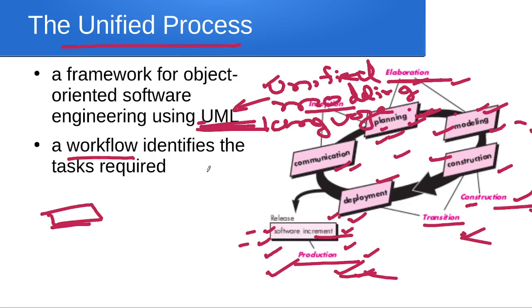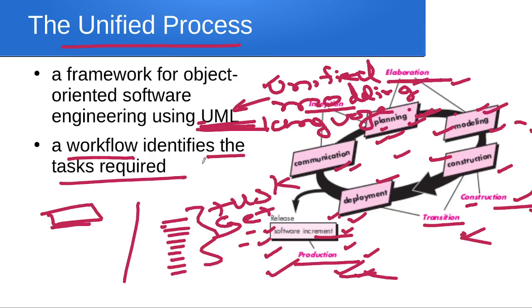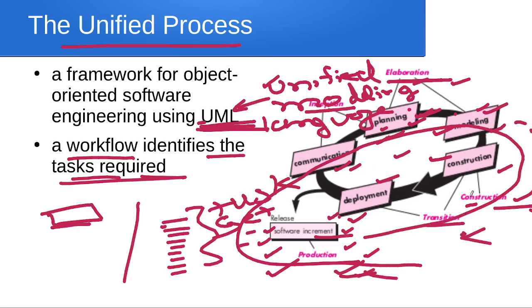The Unified Process also talks about workflow, which identifies the tasks required. The total work is divided into smaller tasks — you can consider it as a task set. It identifies all the tasks required to accomplish and develop the whole software. These are all the important activities of the software engineering process, and in a sequential manner their execution leads to a complete deliverable product.